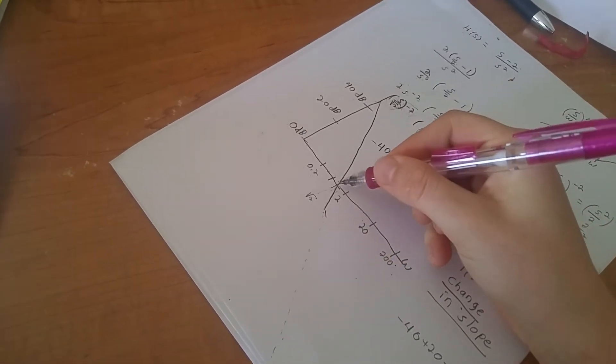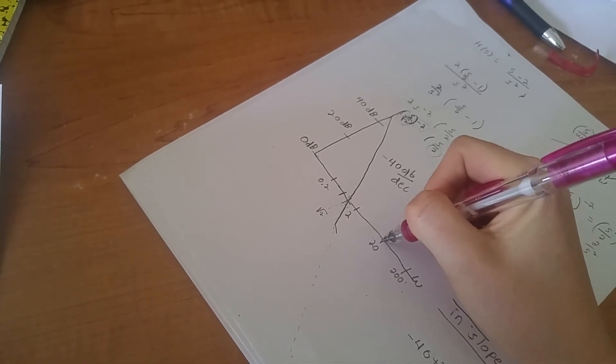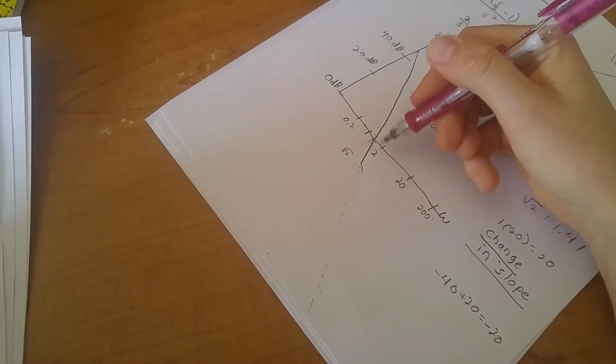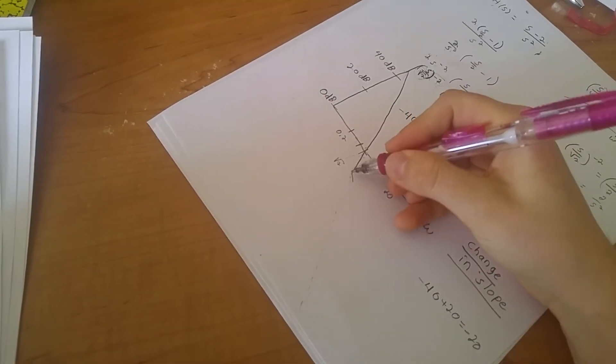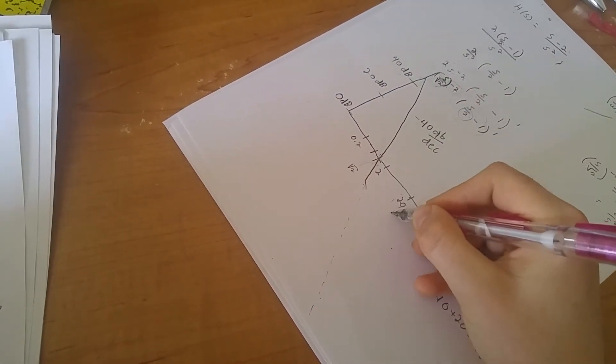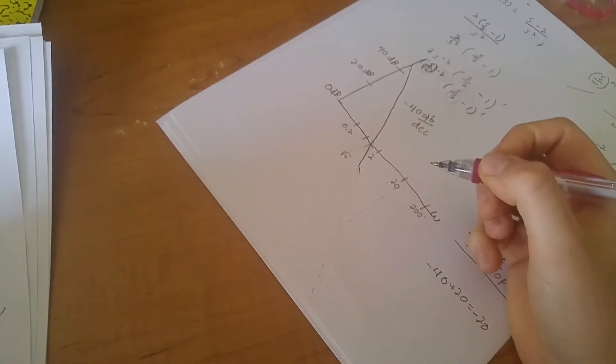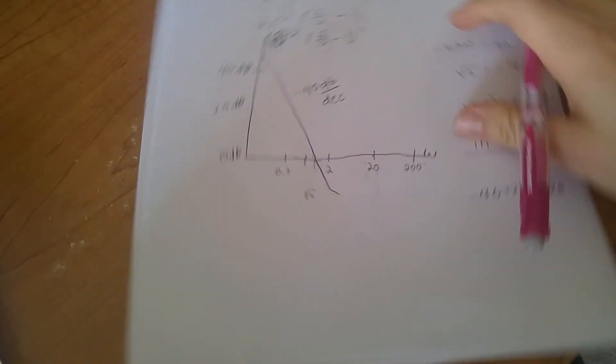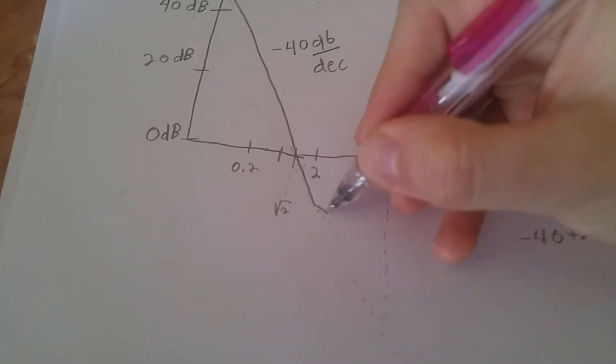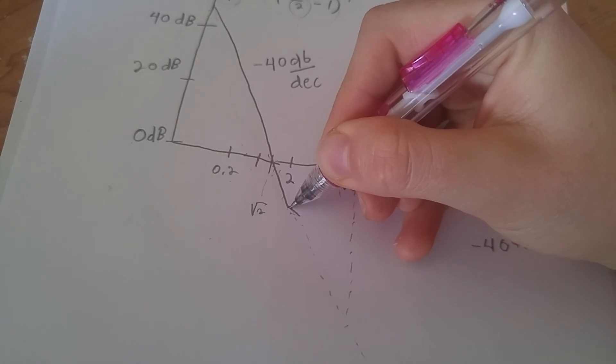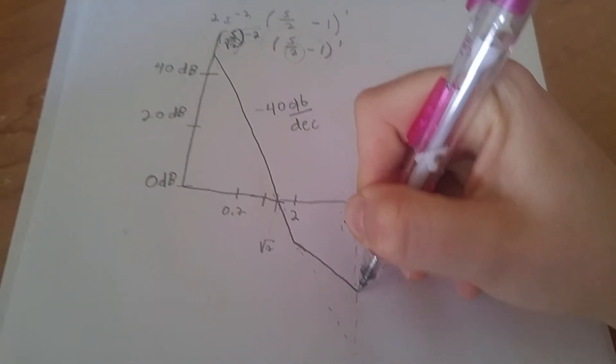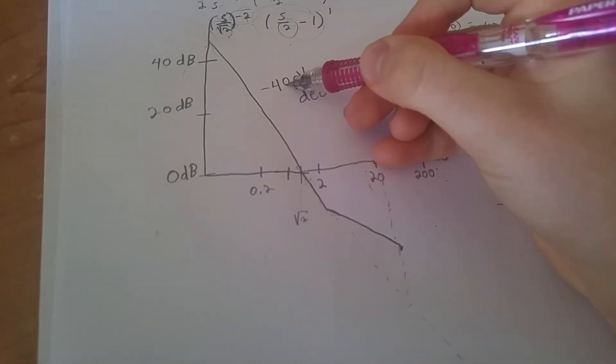Remember, this is per decade. So I'm going from 2 until 20, just like I went from 0 until square root of 2. So I'm going to start from 2 and continue until I get to 20. 20 is going to be this dashed line right there. So then, like I said, this is a slope of negative 20. And I can continue this down, but stop once I get to 20. Because remember, this is only decibels per decade.